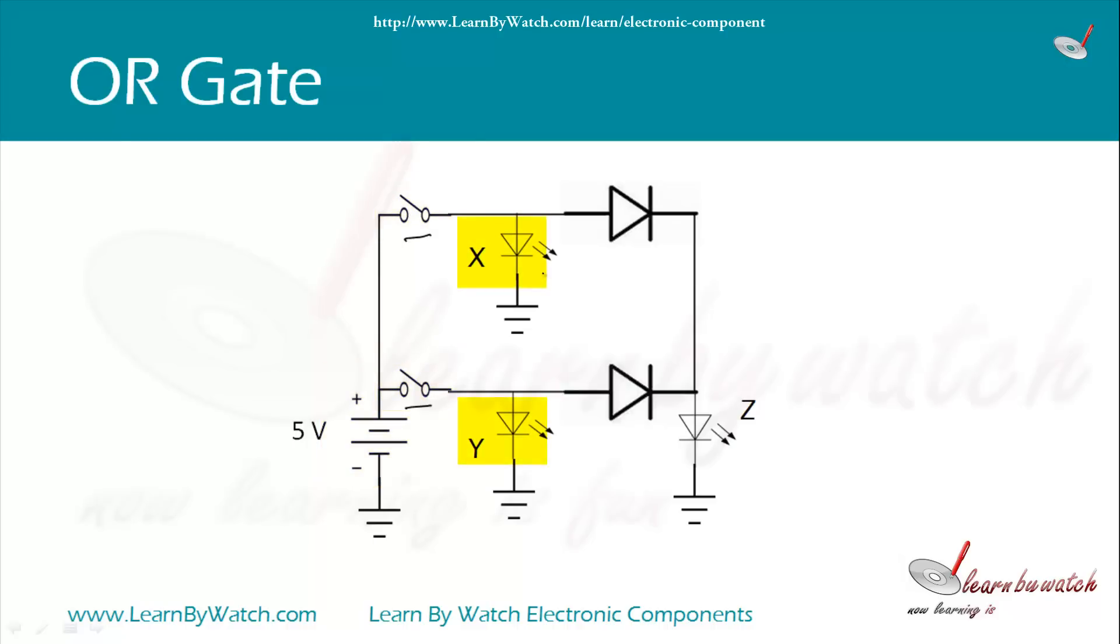We have taken two LEDs named X and Y to determine current input conditions. These are two diodes and this is the output LED. Whenever any of these switches is on, this output LED should glow.